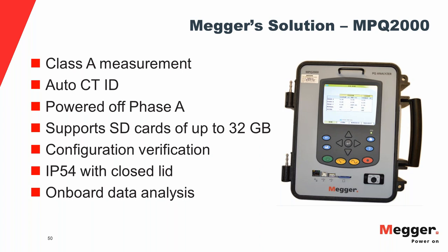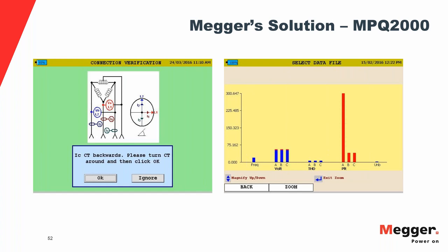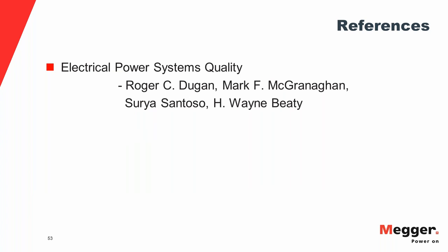Screenshots of the MPQ 2000 show: the unbalance screen displaying vector relationships between the three phases; recording screens showing voltage and current; configuration verification messages when connections are incorrect; and the onboard data analysis screen. Thank you for listening. I'll hand it back to Sarah.